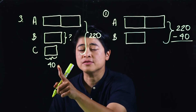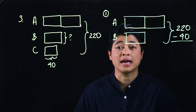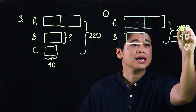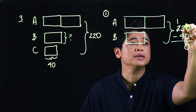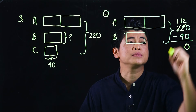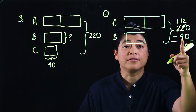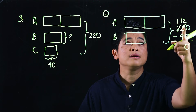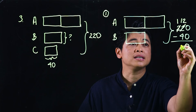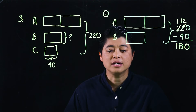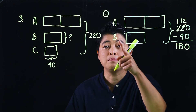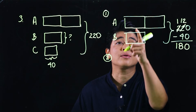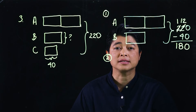220 − 40: starting from the units column, 0 − 0 = 0; moving to tens, 2 − 4 requires borrowing, giving 12 − 4 = 8; hundreds become 1. So 220 − 40 = 180 stickers remaining between Andy and Brian.